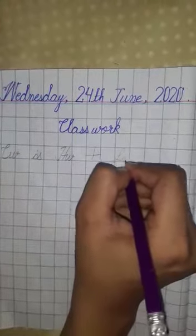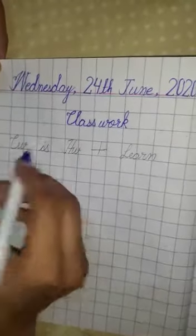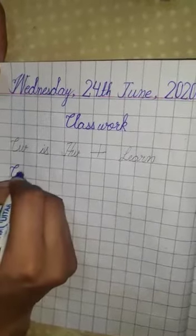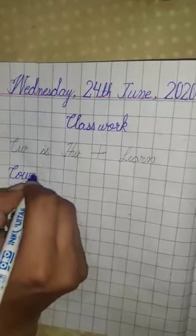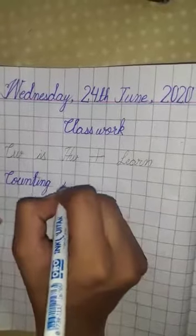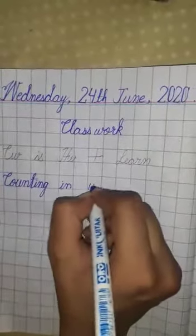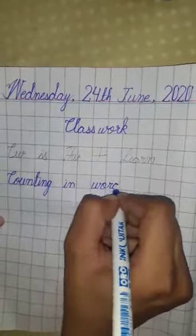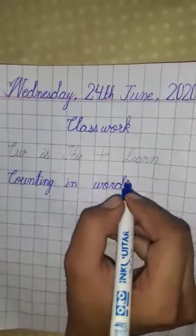Write 'Learn' in pen. After writing 'Learn', skip one block and write 'Counting'. After 'Counting', skip one block and write 'in words'. Counting in words.